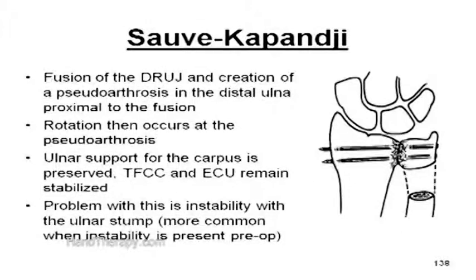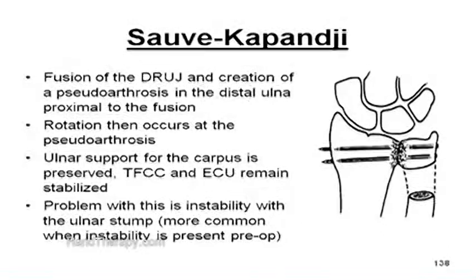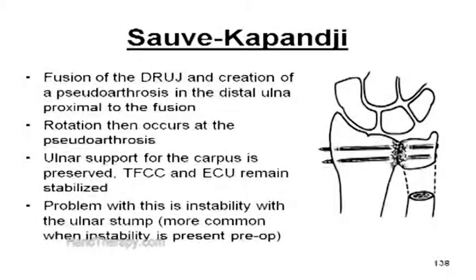Slide 138 depicts a diagrammatic of a Suave-Kapanji procedure. In this procedure, fusion of the distal radial ulnar joint, which is very likely symptomatic at that point, and creating a pseudoarthrosis in the distal ulna proximal to the fusion is performed. Rotation then occurs at that pseudoarthrosis. Ulnar support for the carpus is preserved. The TFCC and the extensor carpi ulnaris remain stabilized. Problems with instability of the ulnar stump are also an issue, and are more common when instability was present preoperatively.